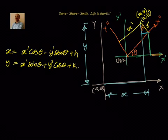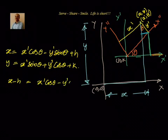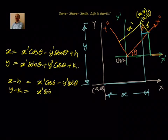So we can write: x minus h equals x dash cos theta minus y dash sin theta. Also, y minus k equals x dash sin theta plus y dash cos theta.